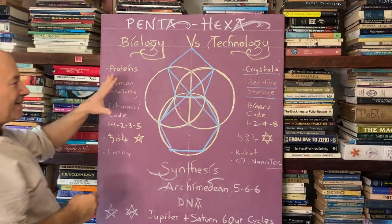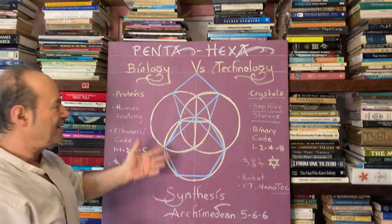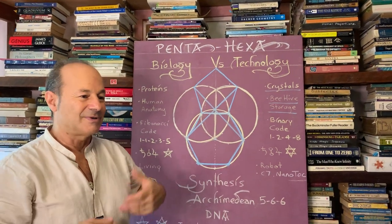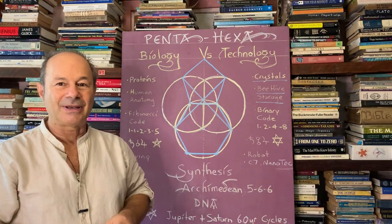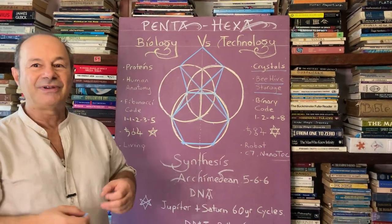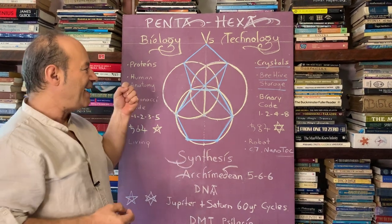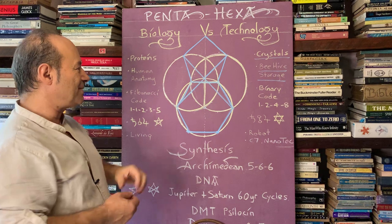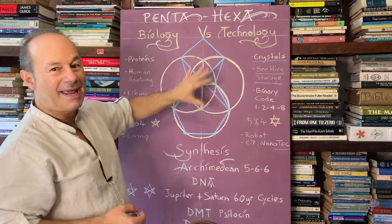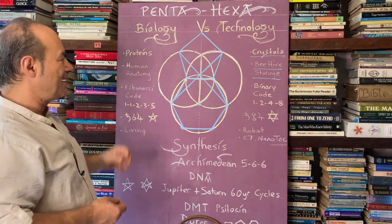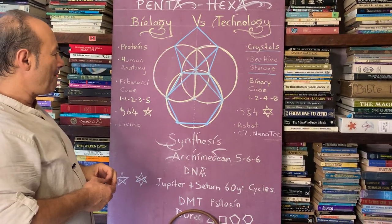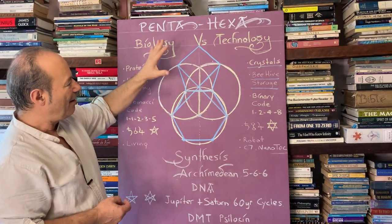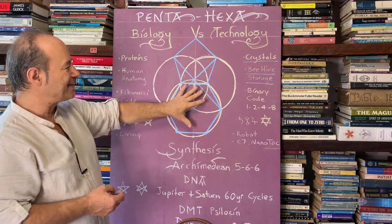I just want you to appreciate that from five or six hundred years ago, the masters of art — Dürer was around at the time of Leonardo da Vinci — studied sacred geometry. It was the underpinning of all creation, and from this they would create their landscapes and portraits. What comes up now is that we have a fusion of the pentagon and the hexagon.